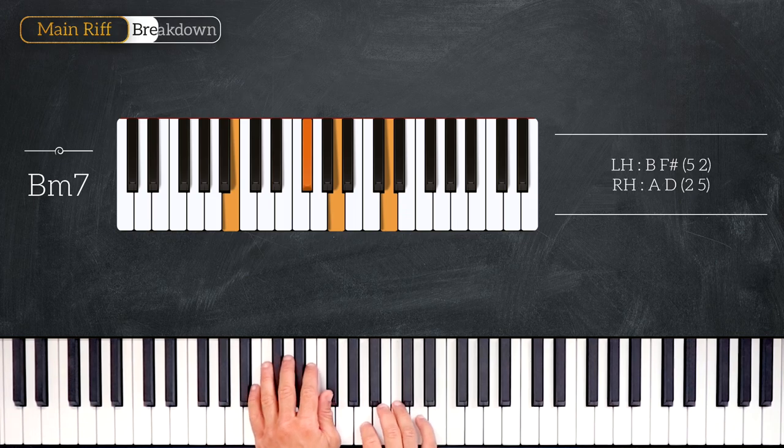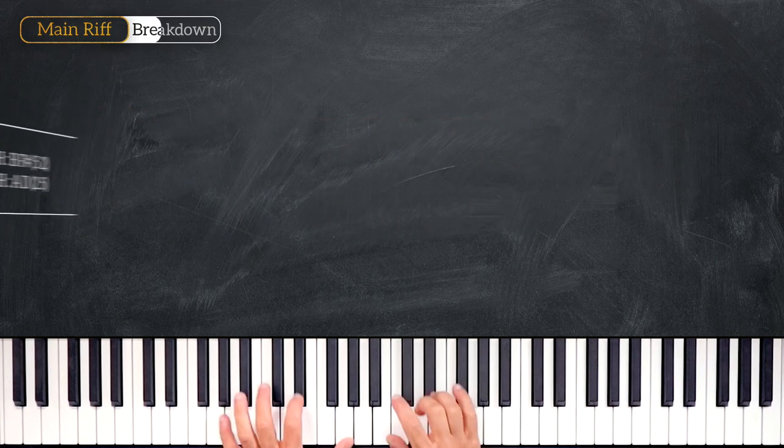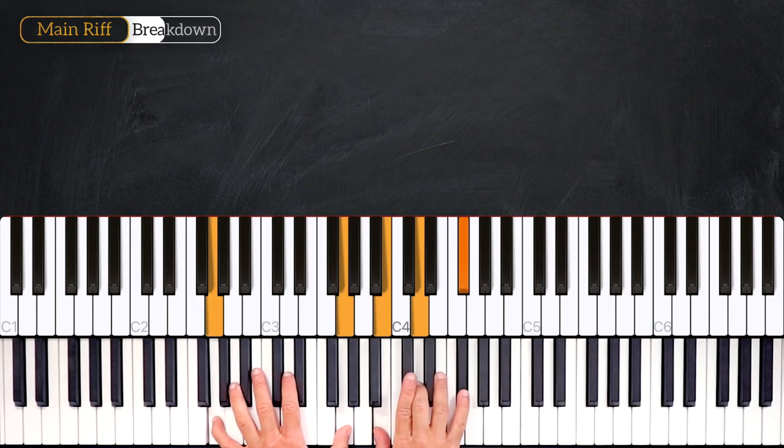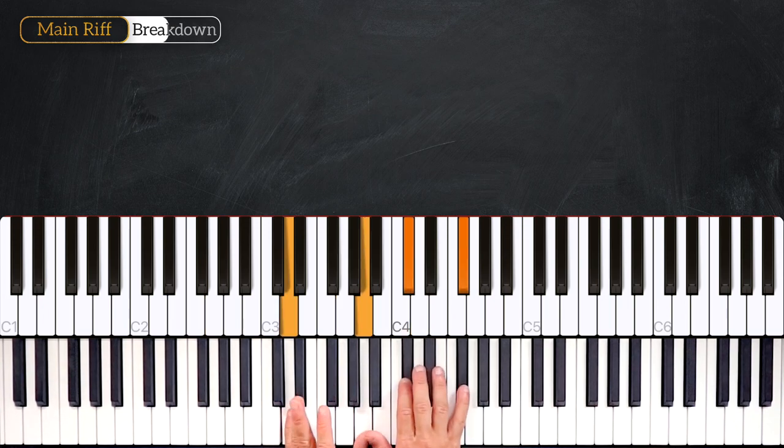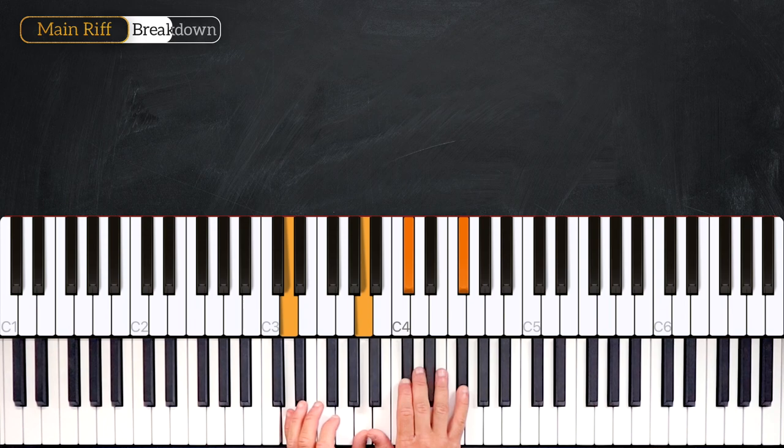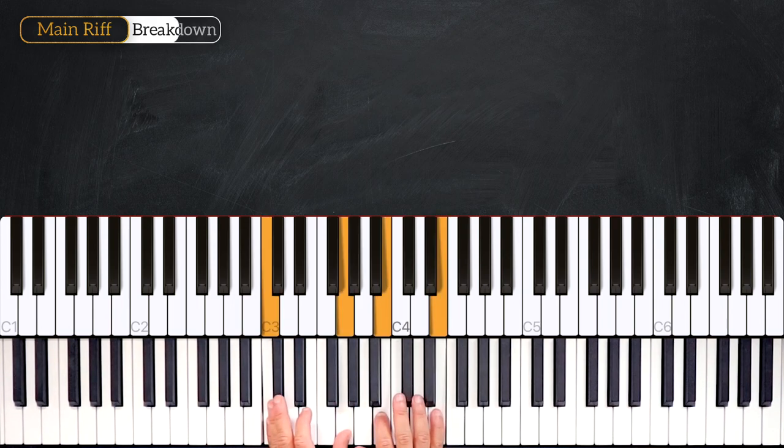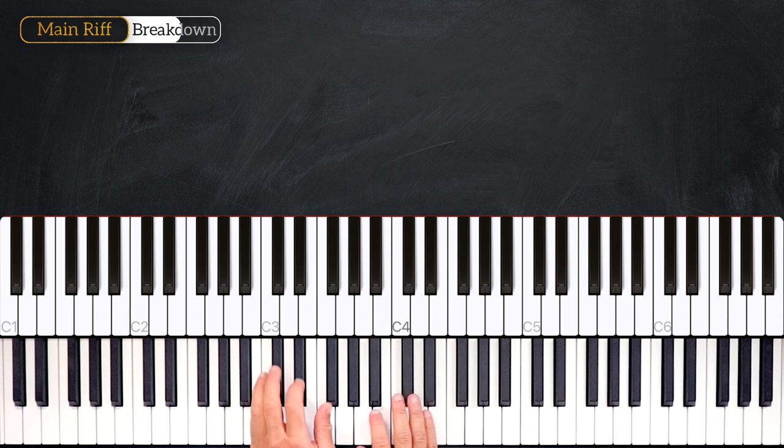Very nice, so let's quickly recap together. We start on the 4th degree playing this G major 7, then we go back to the 1st, on this D major 7. Then we go chromatically down, one half step, one more half step, and we finish on this B minor 7.